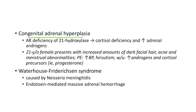Congenital adrenal hyperplasia occurs due to autosomal recessive deficiency of 21-hydroxylase, which causes cortisol deficiency and elevated adrenal androgens. Clinical case: A 21-year-old female presents with increased amounts of dark facial hair, acne and menstrual abnormalities. Physical examination shows elevated blood pressure and hirsutism. Workup shows elevated androgens and cortisol precursors. This is a classic case of congenital adrenal hyperplasia — the dark facial hair and acne are due to elevated androgens, and the elevated blood pressure is due to elevated cortisol precursors.